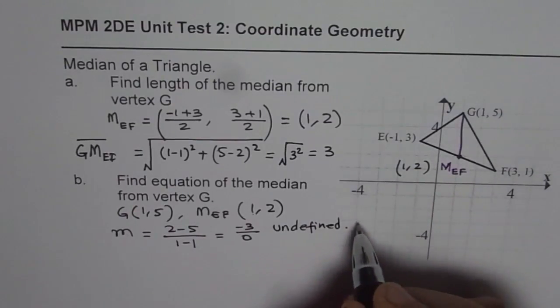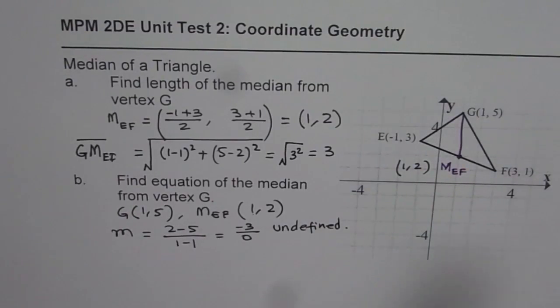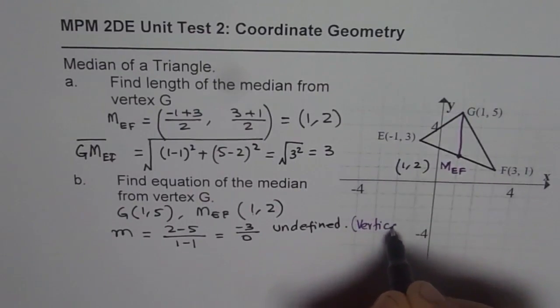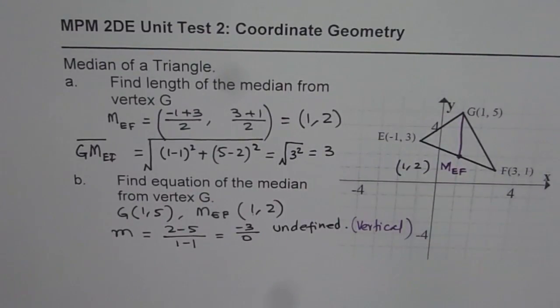Undefined. Since it's a vertical line, correct? So as you observe, since it is a vertical line, the slope is undefined. In this case, what is the equation of this vertical line?